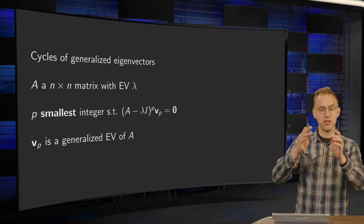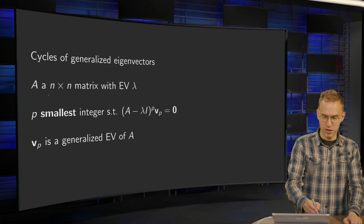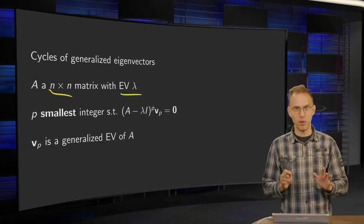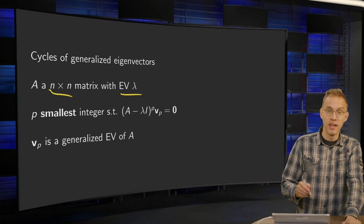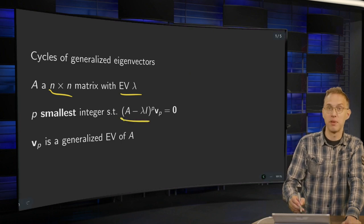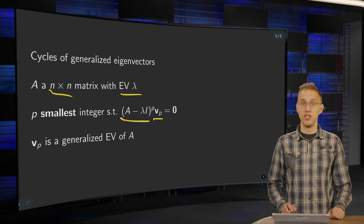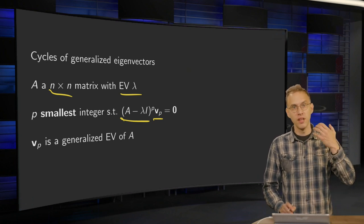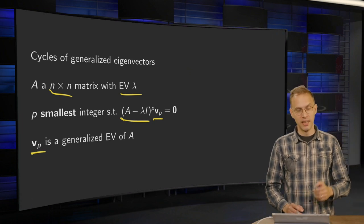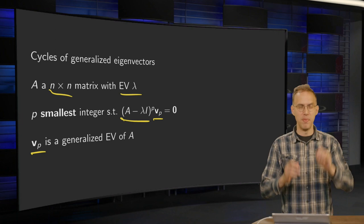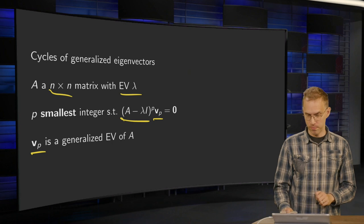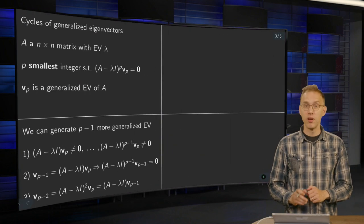Let A be some large n×n matrix with some eigenvalue λ. And let p be the smallest integer such that (A − λI)^p times vp equals the zero vector. Then we know that vp is a generalized eigenvector of A. Let p be some number like 10 or so — some bigger integer — and it's the smallest one.